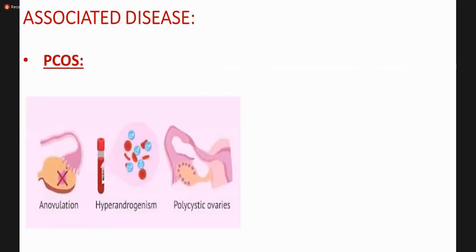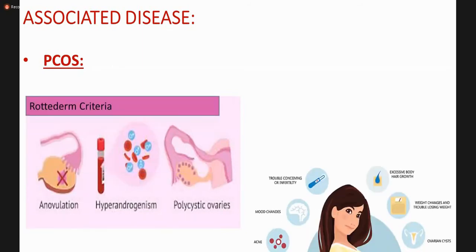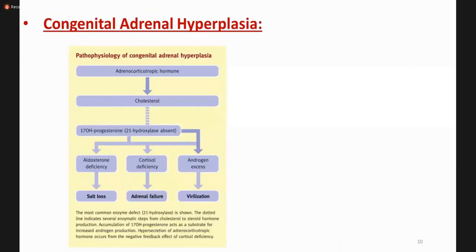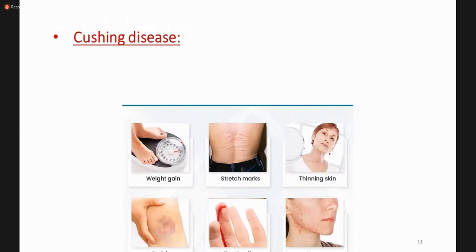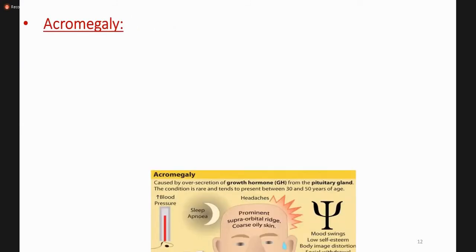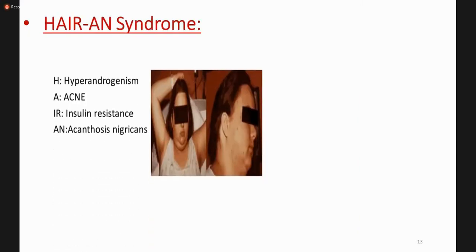The causes of acne: the most common hormonal cause is PCOS, in which there is anovulation, hyperandrogenism, and polycystic ovaries. Other causes include congenital adrenal hyperplasia with excessive glucocorticoid formation, acromegaly with excessive growth hormone, and HAIR-AN syndrome — which involves hyperandrogenism, insulin resistance, and acanthosis nigricans, apart from acne.